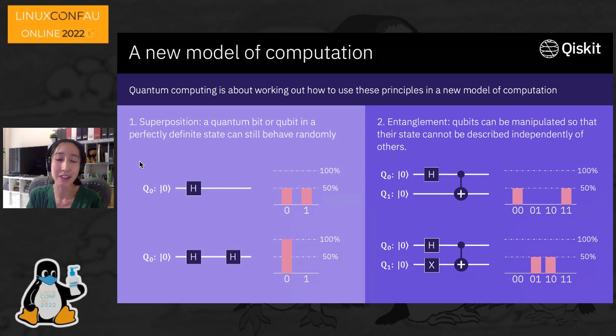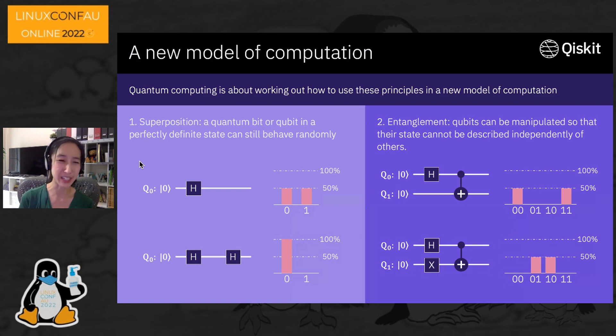This is where it's different from classical probability — you can't undo a coin flip, whereas with a qubit in superposition you can reverse it with another gate.